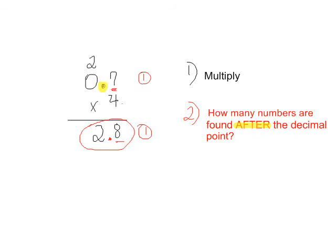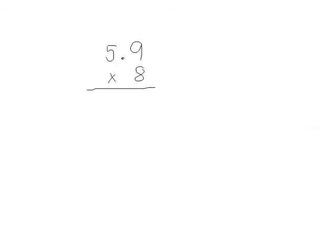Let's try another problem. The problem is 8 times 5 and 9 tenths, or 8 times 5.9. 8 times 9 is 72, and up goes a 7. 8 times 5 is 40, plus 7 becomes 47.